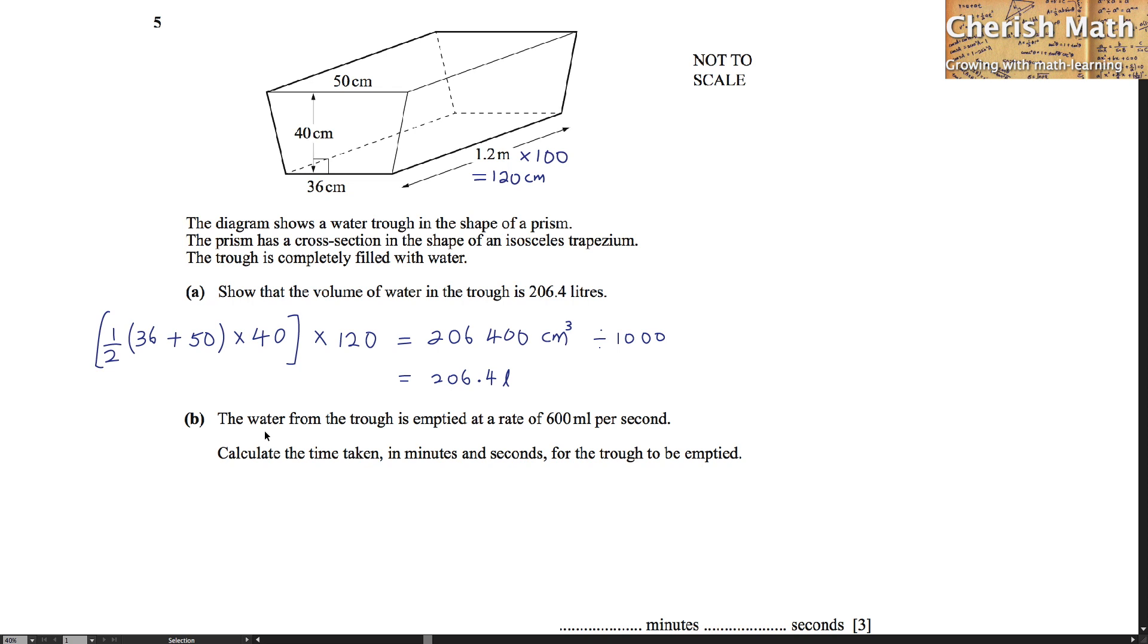Part B. The water from the trough is emptied at a rate of 600 ml per second. Calculate the time taken in minutes and seconds for the trough to be emptied.